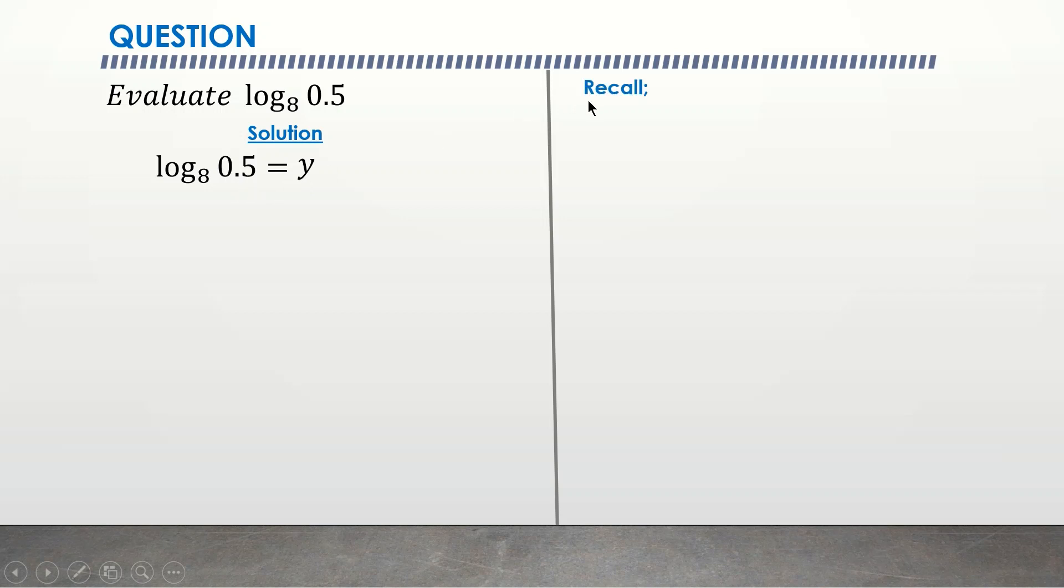Before I start this, you have to recall in my previous videos that for us to simplify a log in this format, we have to equate the argument to the base to the power of y. So that means that 0.5 is equal to 8 raised to the power of y. Now my left hand side is a decimal number. I have to convert it to a fraction, so I come this way.